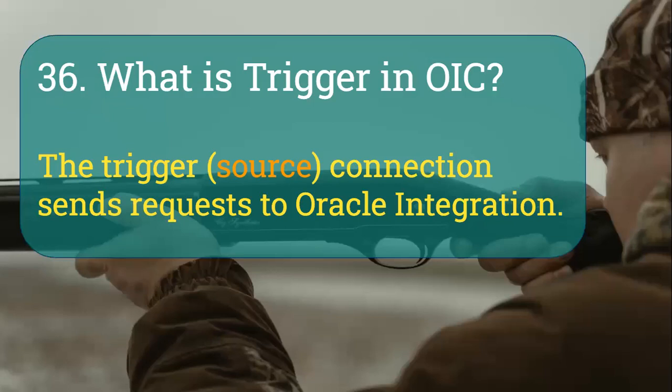What is a trigger in OIC? The trigger is a connection. The trigger connection sends request to Oracle integration. Let's say we are working on Oracle order management integration, and whenever the order is created or updated, you want to trigger this OIC integration. In that case, first we need to create a connection and we can configure it as a trigger.